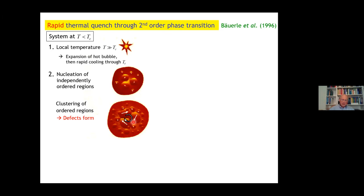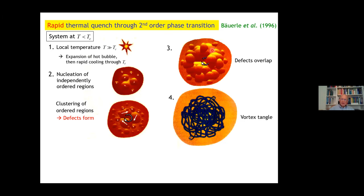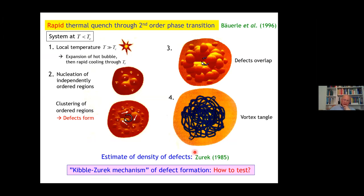As this comes together, we have a clustering and defects form. The defects overlap and eventually you get what is called a vortex tangle.